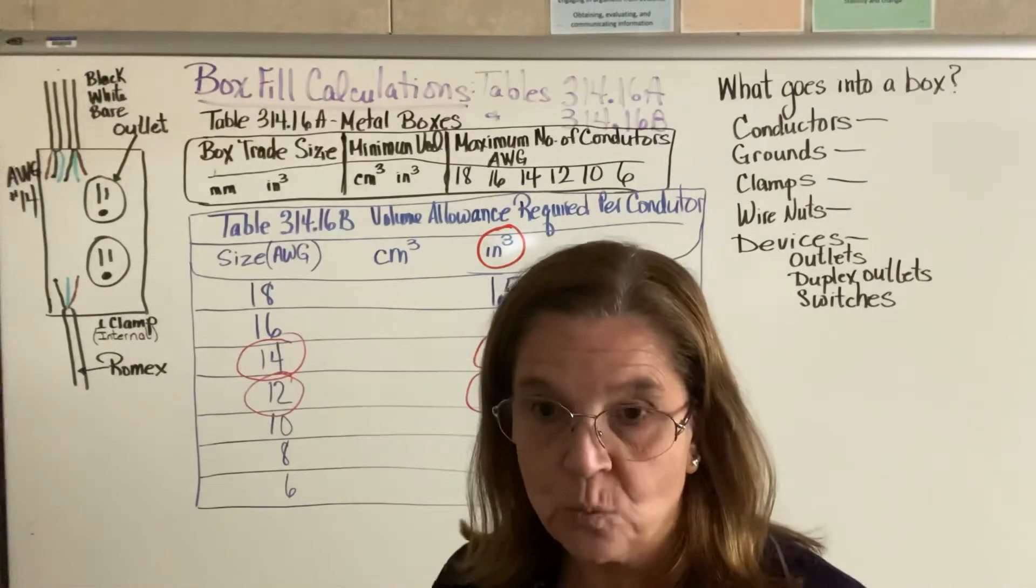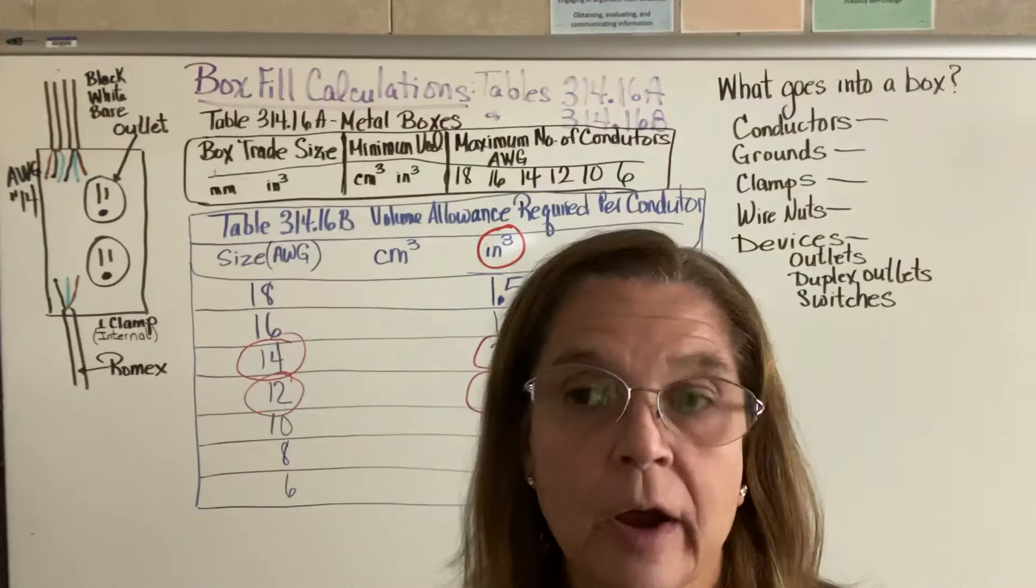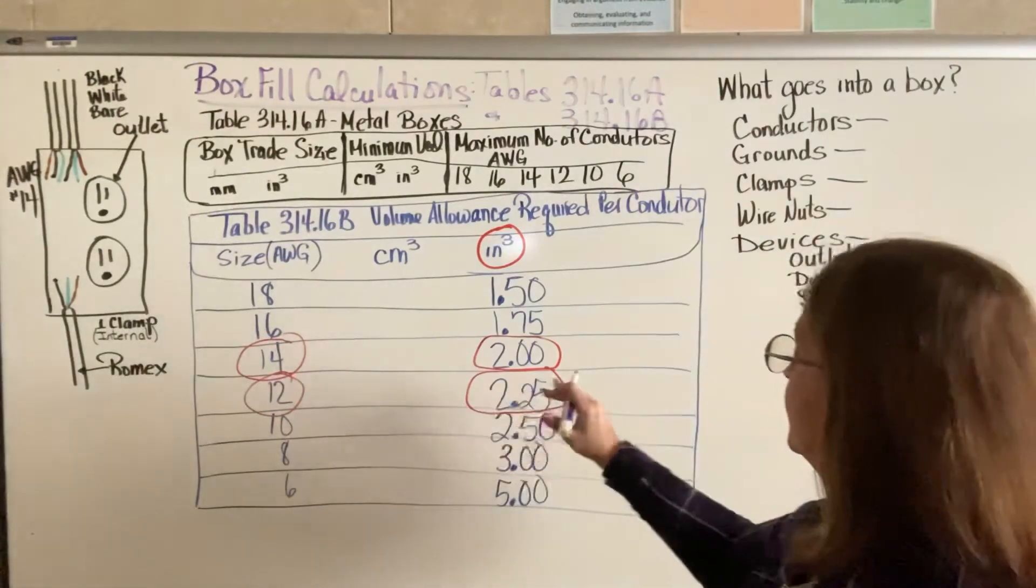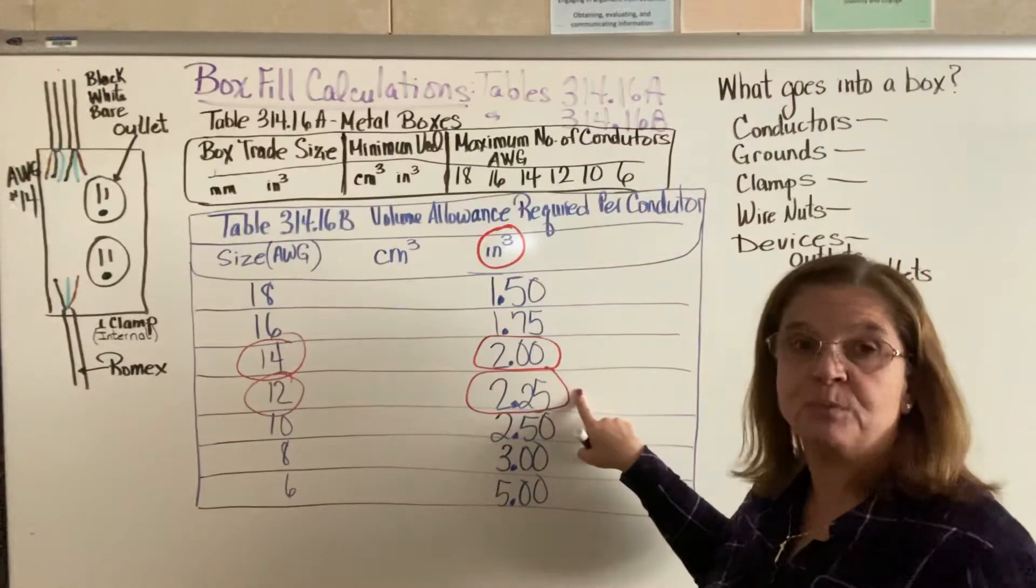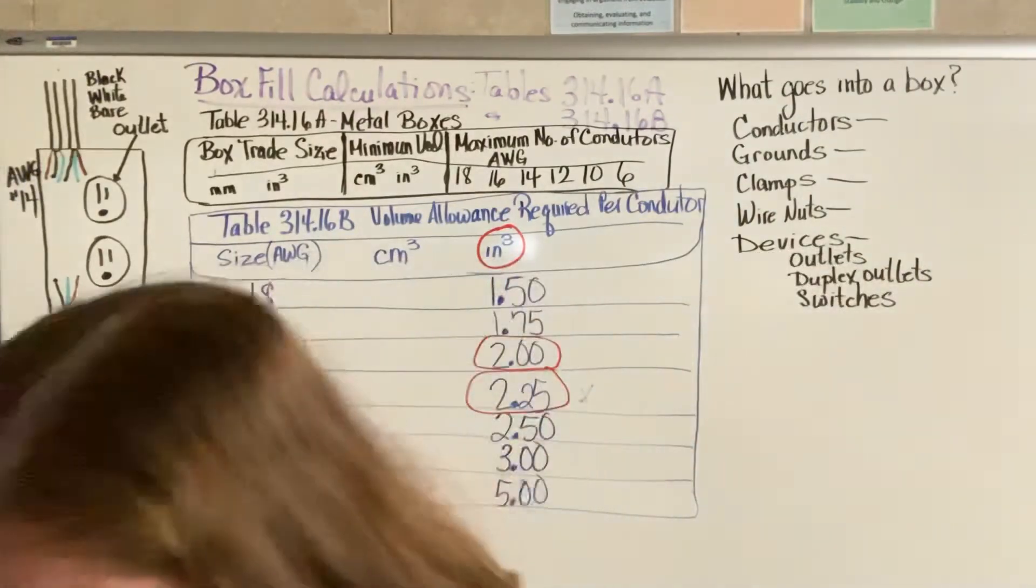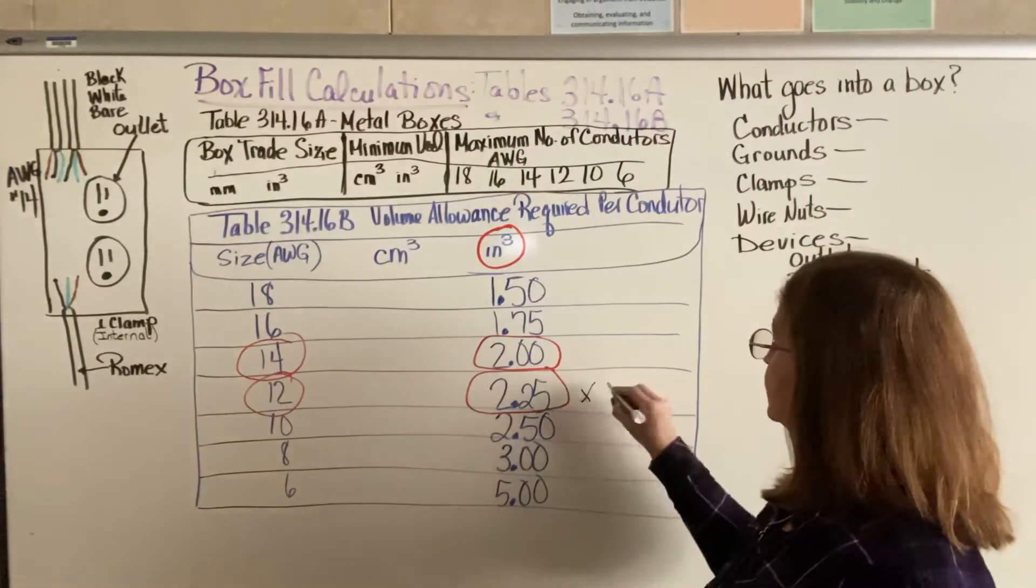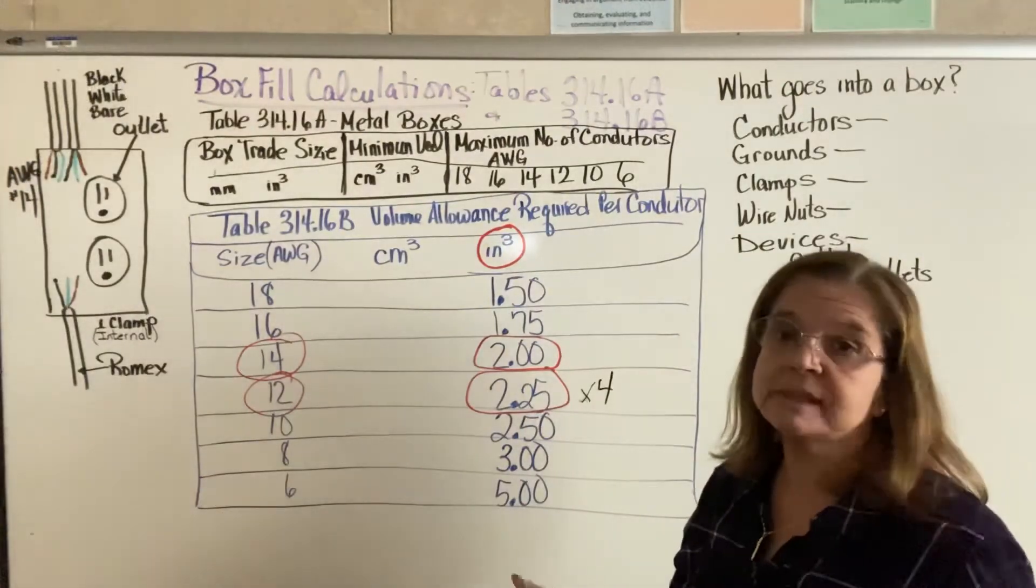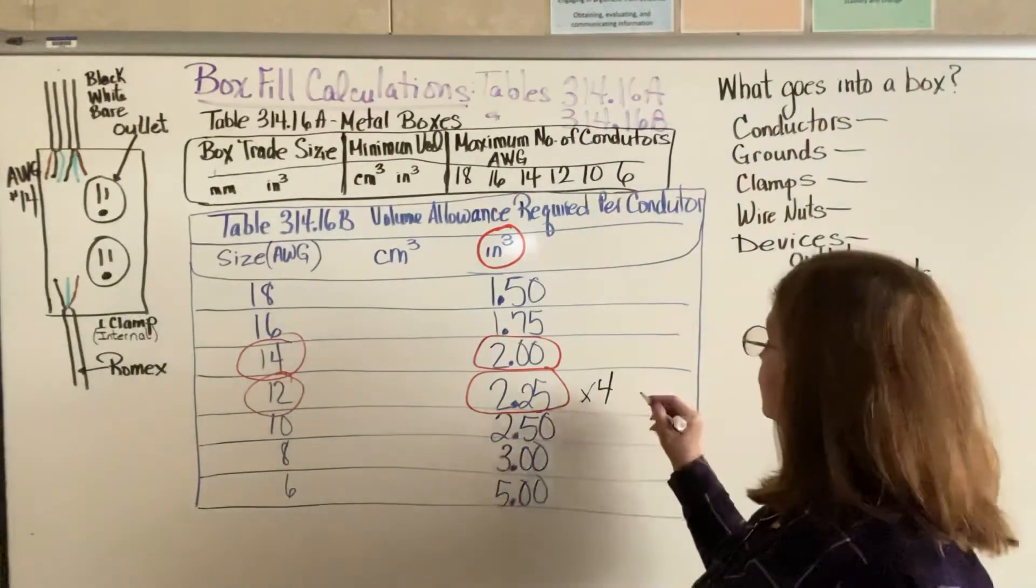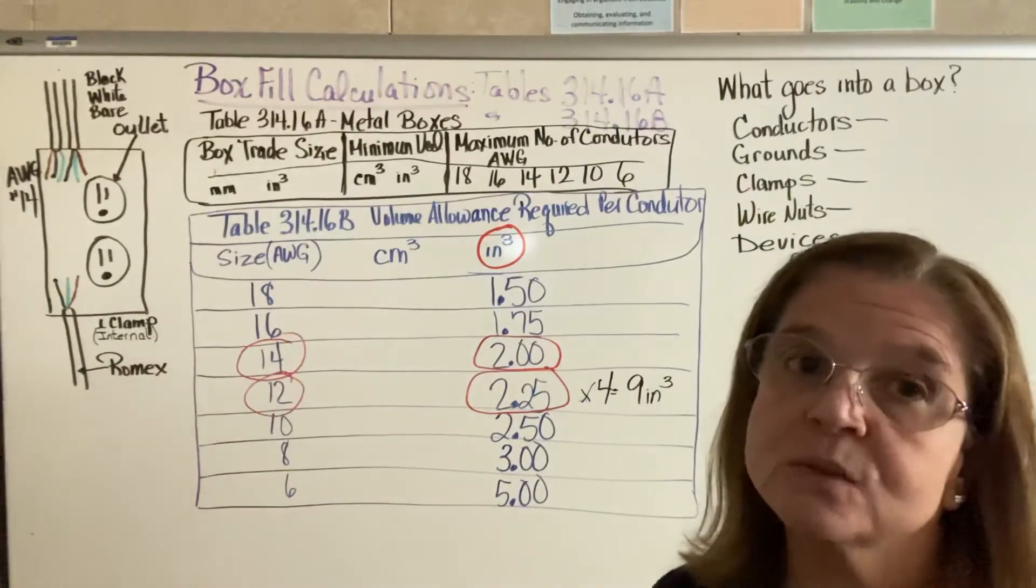So if you're working inside a box and you're looking to put four conductors in that are size 12, the amount of volume just for the conductors, it will be 2.25 times 4 to figure out how much space is being taken up. 2.25 times 4, quickest way to do this is think of it as money. 2 times 4 is $8, .25 times 4 is $1. So this would be 9 cubic inches of space just for the four size 12 conductors.